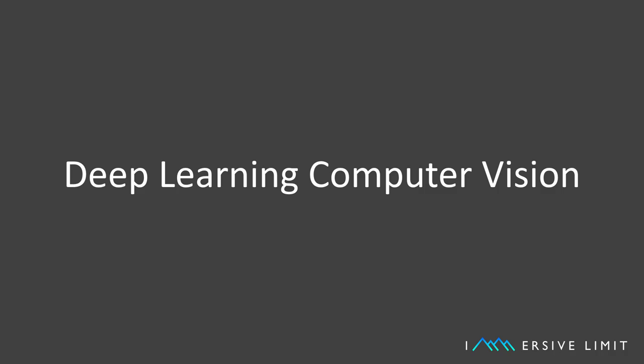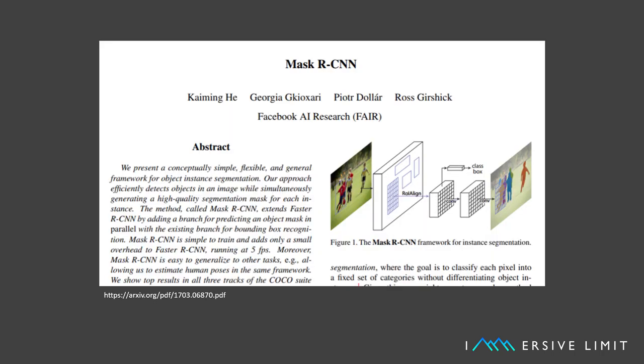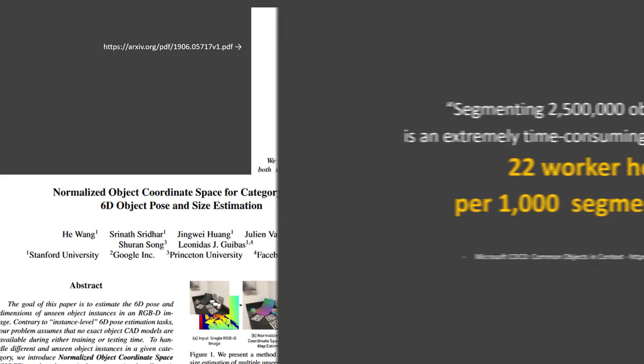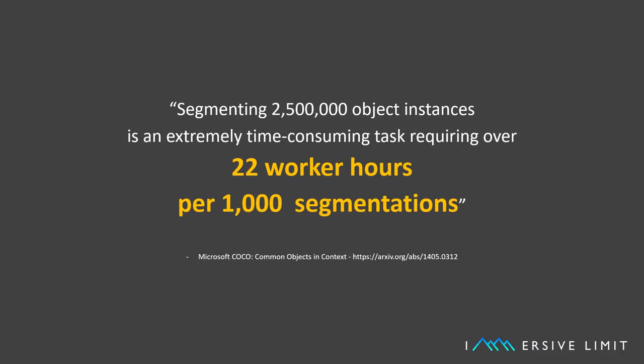Over the past several years, deep learning has revolutionized the field of computer vision. Today we have highly sophisticated deep learning computer vision algorithms that can detect objects and even predict things like depth, position, and orientation. These algorithms need a lot of annotated images to train on, and these image datasets are extremely challenging to gather, as they require hundreds if not thousands of hours to create and annotate manually.